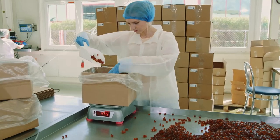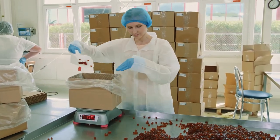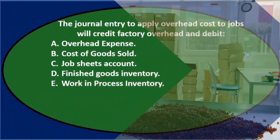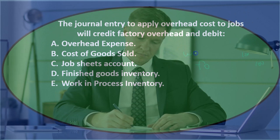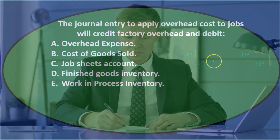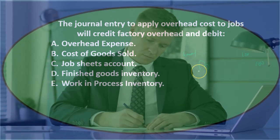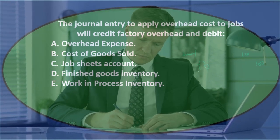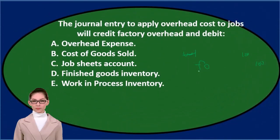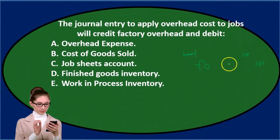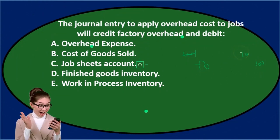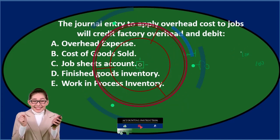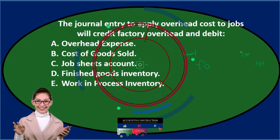Factory overhead is going to be credited — let's say $100 — and then we're going to debit something. If you write it down in journal entry format, it helps to think about what the journal entry is going to be. Write down the debits and credits, make up a number or put an X or dollar sign there, and that might help you think about what the other side will be.